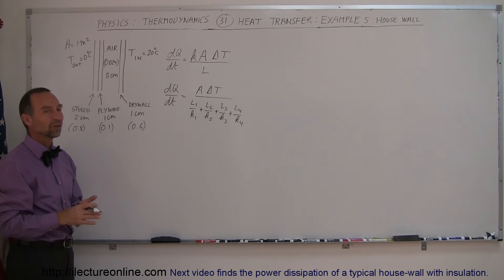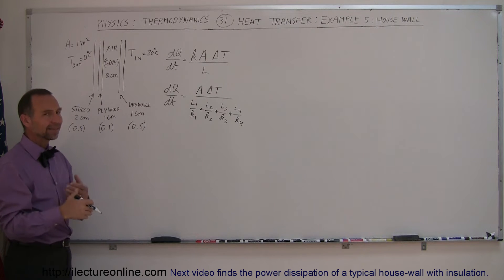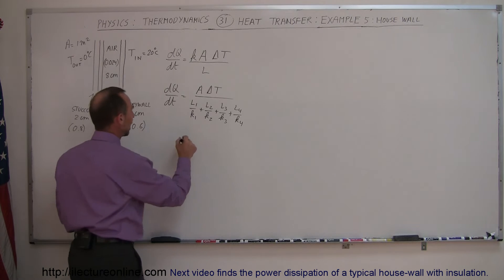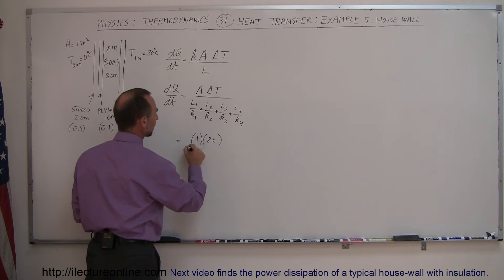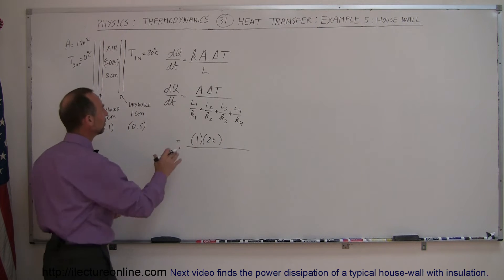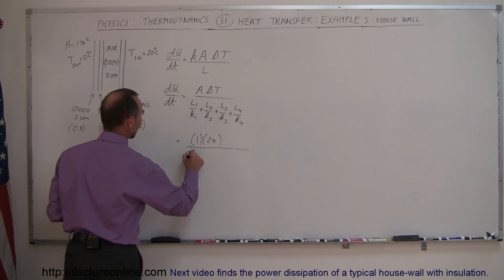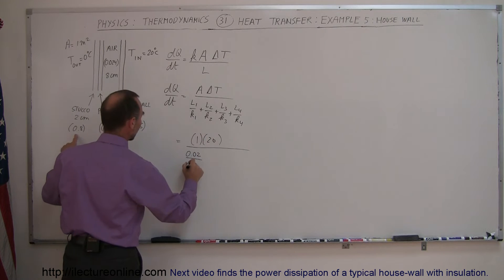So using those numbers, and this of course would be for each square meter of wall, and of course a house has a lot of square meters, let's see what the heat loss would be through a wall that's not insulated. So in this case, that would be one square meter, difference in the temperature is twenty divided by, and just to keep it clean, I'm going to leave out the units in this case. So L1 right here is going to be two centimeters, so that's 0.02 divided by K1, which is 0.8.